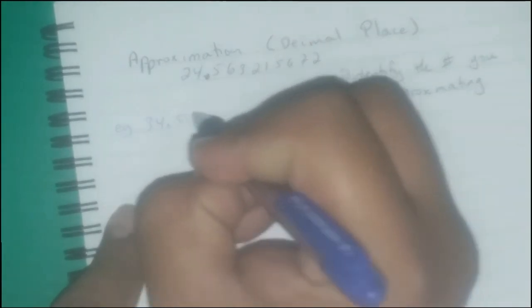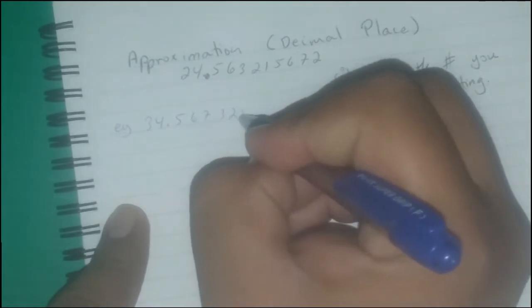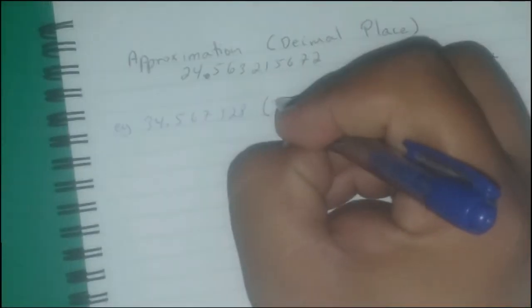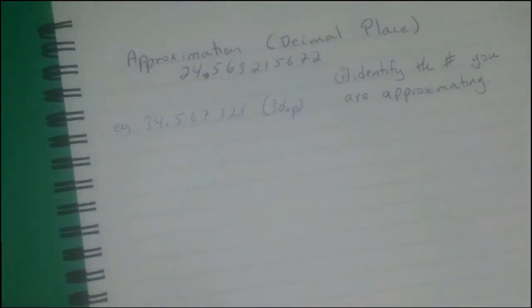The first thing we need to do is identify — similar to the previous method — identify the number you are approximating. If you have a problem, for example 34.567328, and the problem asks you to approximate that number to 3dp, you need to find which digit is the third decimal place.